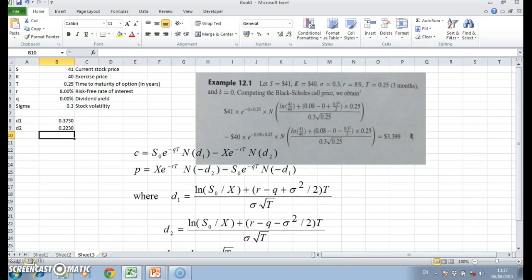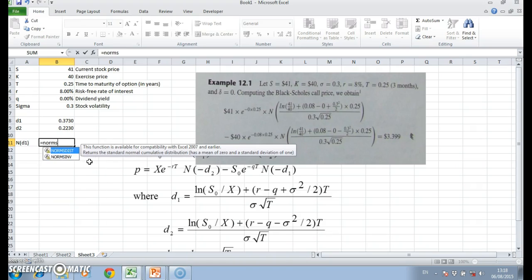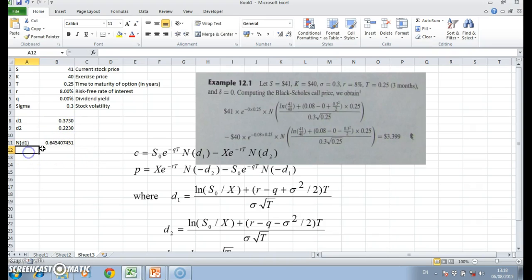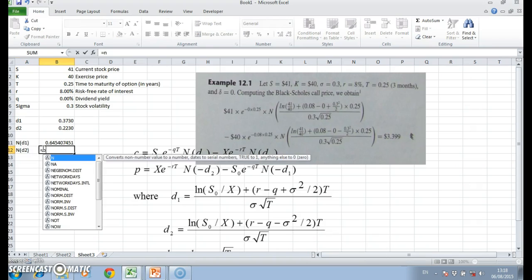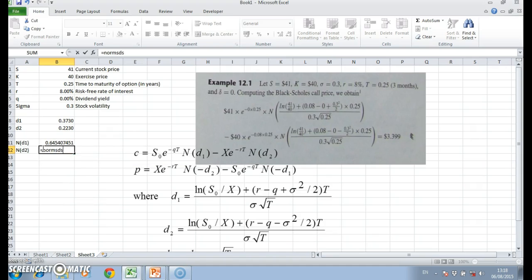And then d1 must be transformed into norm's dist, because here we have norm's dist d1, norm's dist d2, or the norm cumulative probability of d1, norm cumulative probability of d2. So we can write nd1 equals to norm's dist, and nd2 equals to norm's dist d2.